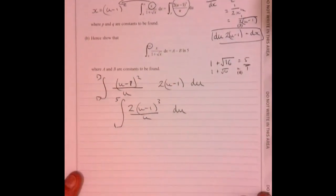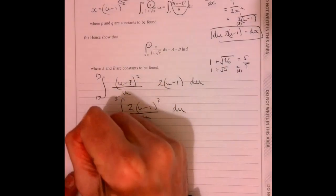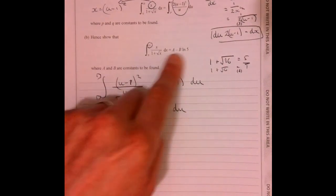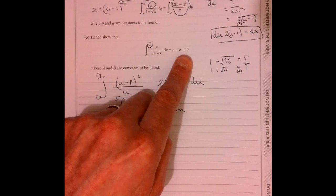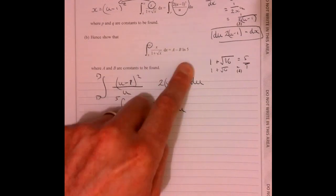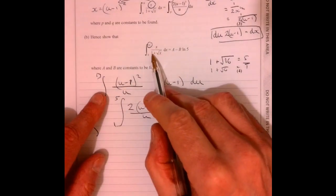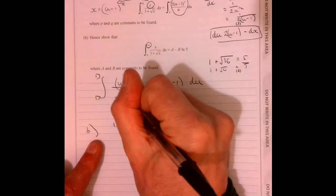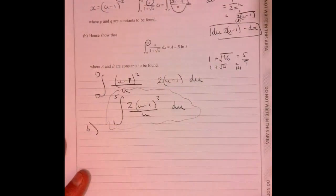Right. Now, so for part B of the question, part B now says, right, so do this and show that this is the answer. Obviously, we're going to find out what A and B are. But in other words, we're going to do this. This is what it's asking us to do.